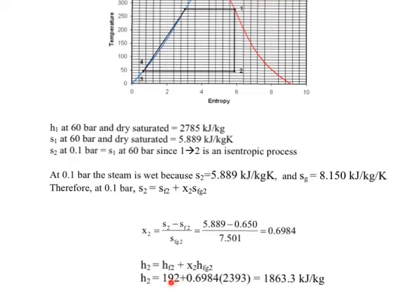And we will get the 192 and the 2393 from the 0.1 data. Remember, at point 2 H2 here, we are actually working at 0.1 bar.